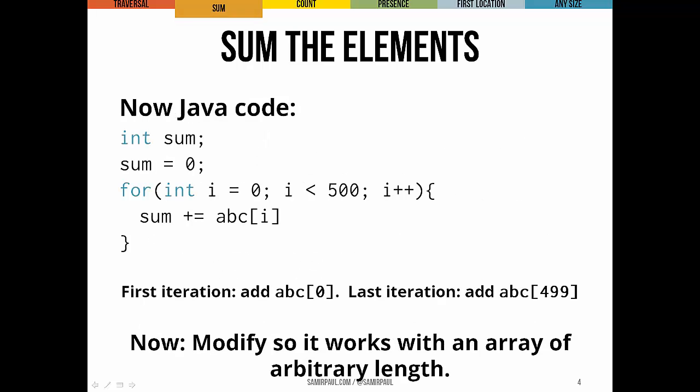Here's what a Java solution to that pseudocode looks like. You can tell it actually looks really similar. We declare our sum accumulator variable, initialize it, and then we loop from i starting at zero until i is less, as long as i is less than 500. So in other words, until 499 inclusive. And we say for each item, sum plus equals ABC sub i. First iteration, we're adding ABC sub zero. Last iteration, we're adding ABC sub 499.